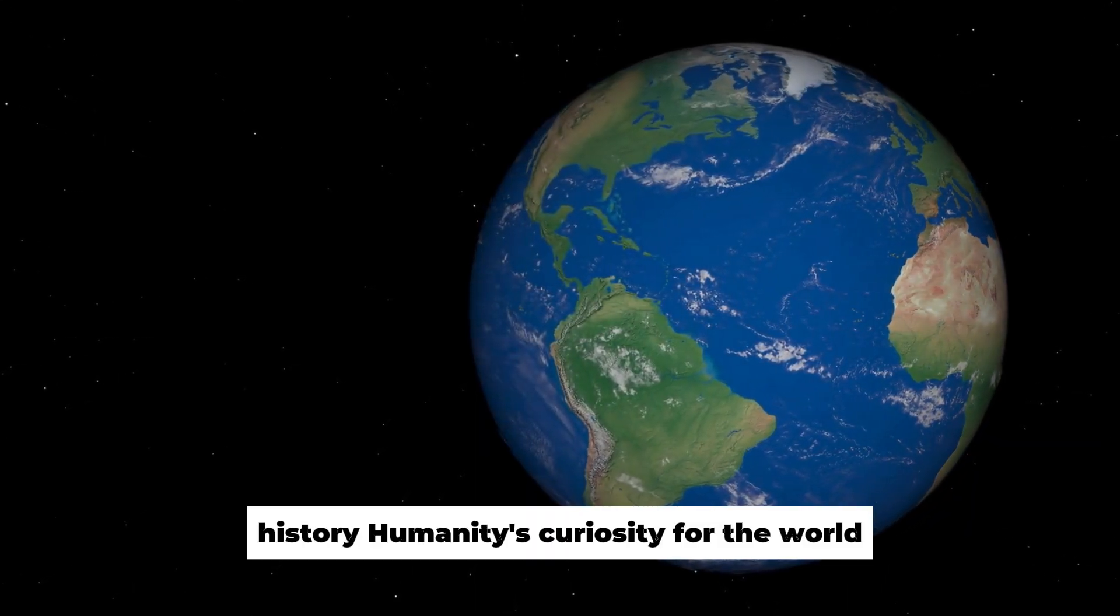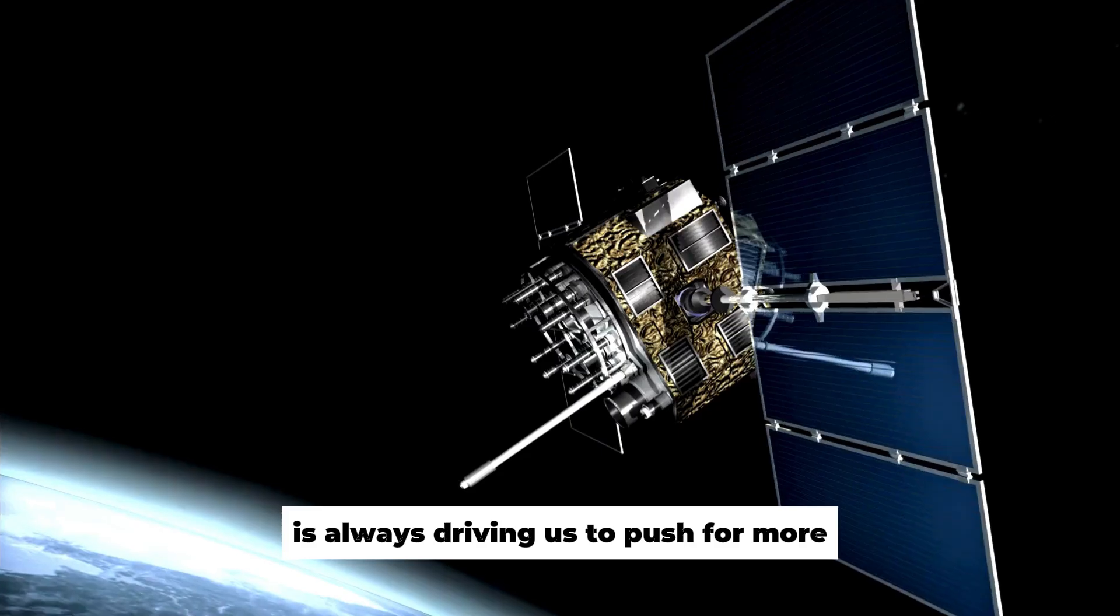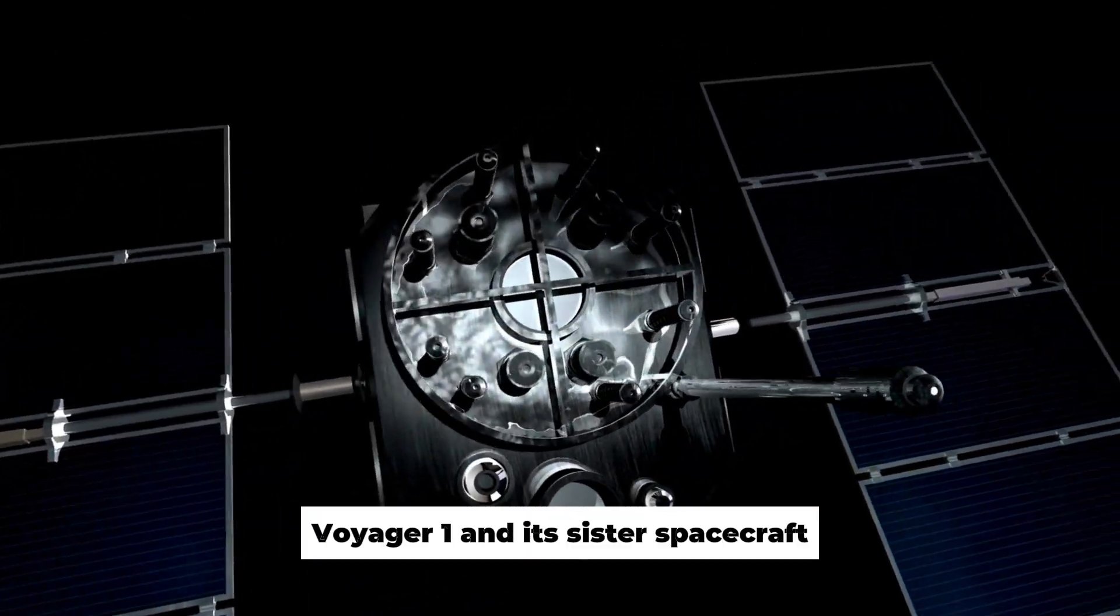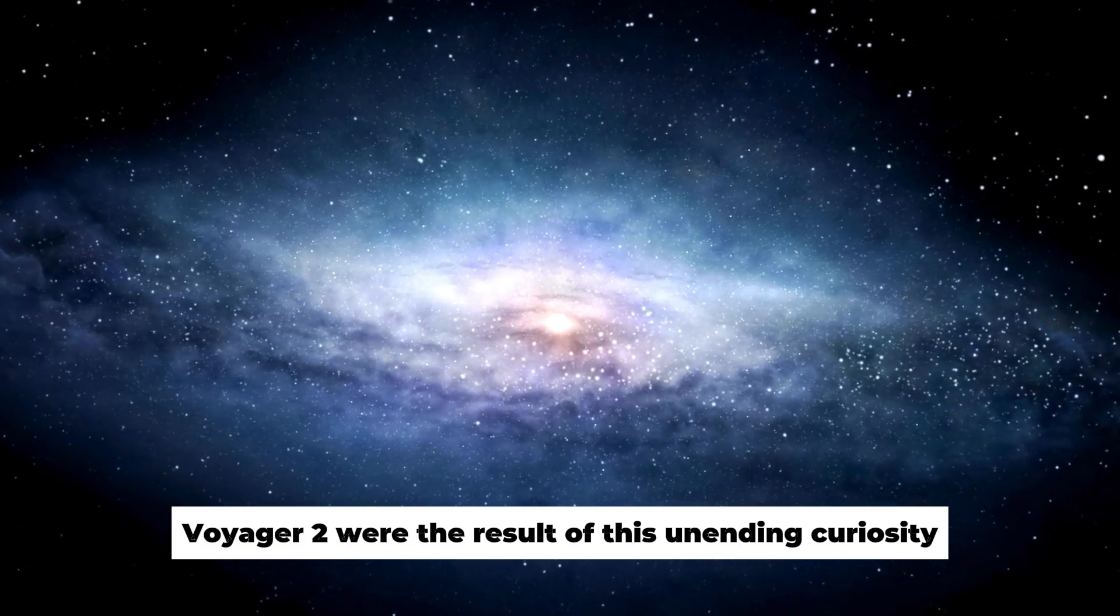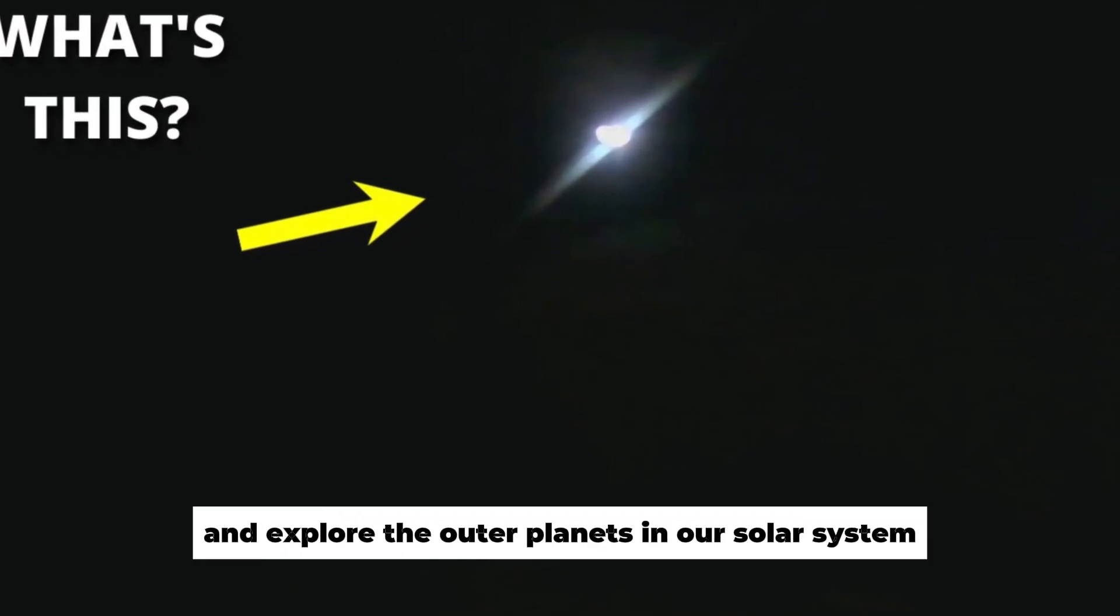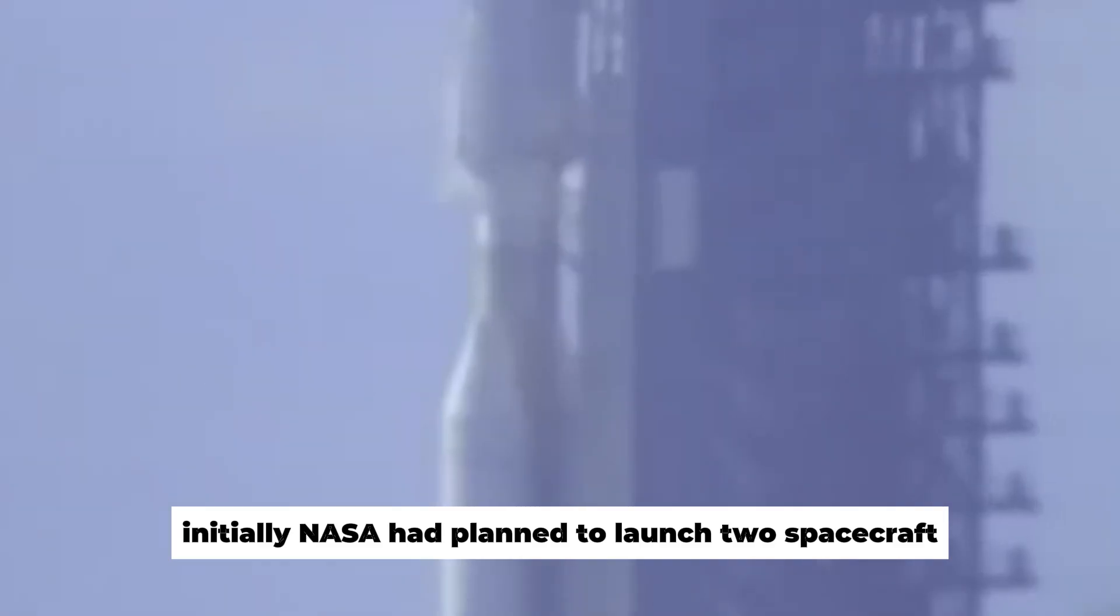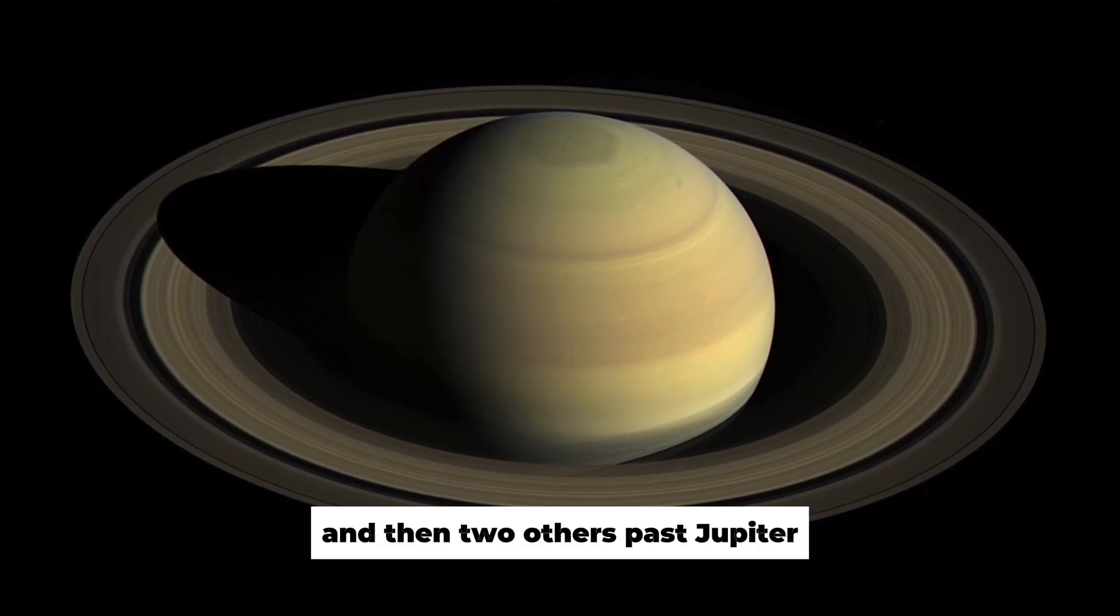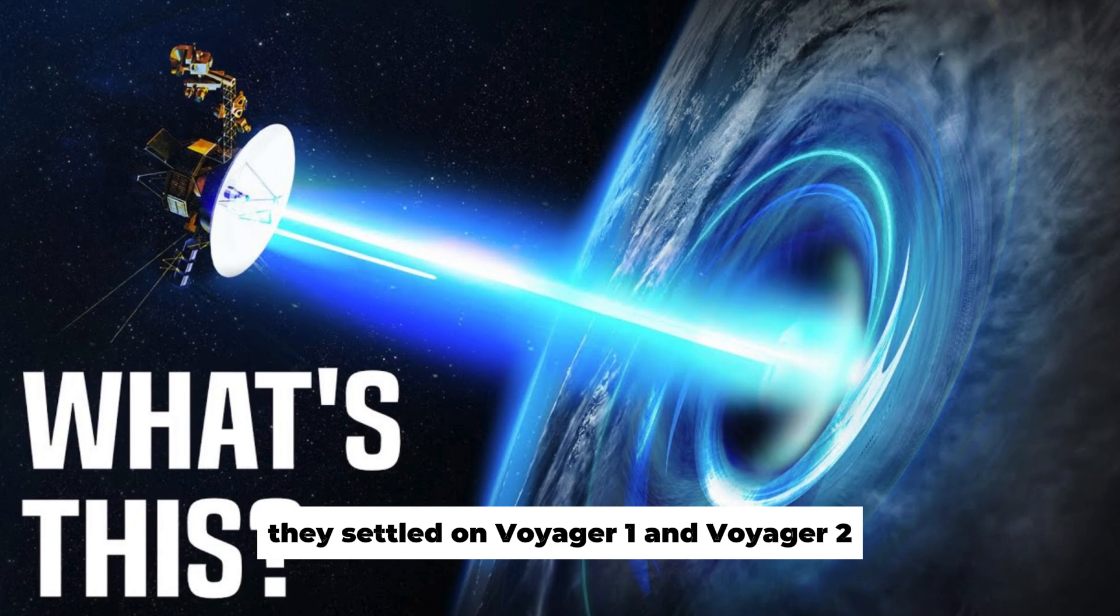History: Humanity's curiosity for the world that lies beyond the confines of what we know and understand is always driving us to push for more. Voyager 1 and its sister spacecraft, Voyager 2, were the result of this unending curiosity to learn about interstellar space and explore the outer planets in our solar system. Initially, NASA had planned to launch two spacecraft past Jupiter, Saturn, and Pluto, and then two others past Jupiter. But given budgetary constraints, they settled on Voyager 1 and Voyager 2.